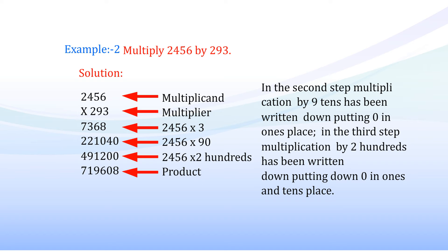Example 2: Multiply 2,456 by 293. Solution: 2,456 (multiplicand) × 293 (multiplier). 2,456 × 3 = 7,368; 2,456 × 90 = 2,21,040 (zero placed in one's space); 2,456 × 200 = 4,91,200 (zeros placed in ones and tens). Product = 7,19,608. In the second step, multiplication by nine tens has been written putting zero in one space. In the third step, multiplication by two hundreds has been written putting zeros in one's and tens place.